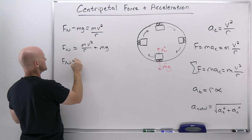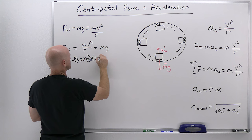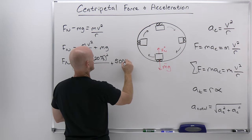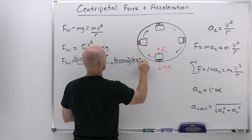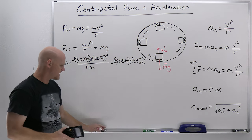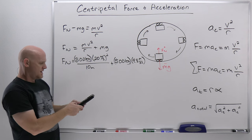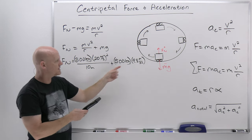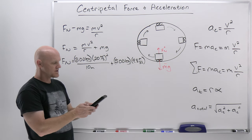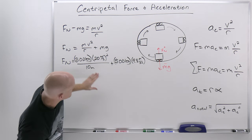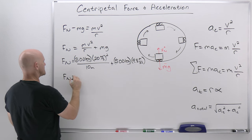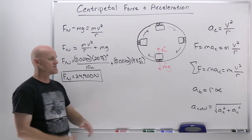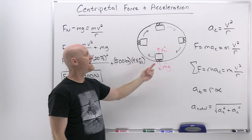Solving for normal force: N = mv²/r + mg. Plugging in: 500 kilograms times 20 meters per second squared divided by 10 meters, plus 500 kilograms times 9.8 meters per second squared. 500 times 20² divided by 10 gives 20,000 newtons, and 500 times 9.8 gives 4,900 newtons. So 20,000 plus 4,900 gives a normal force of 24,900 newtons at the bottom — our baseline, the largest normal force.